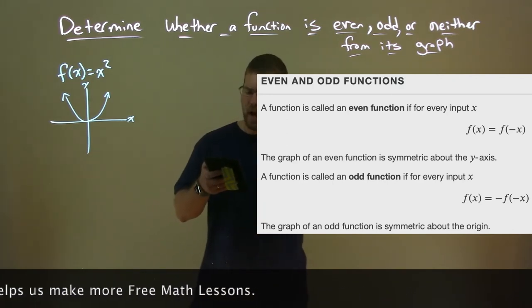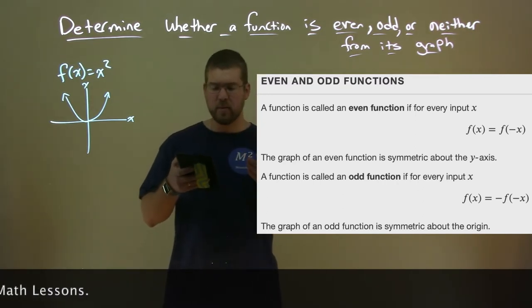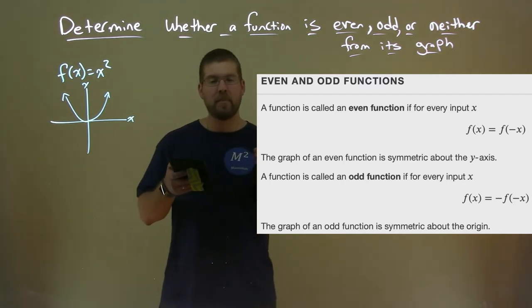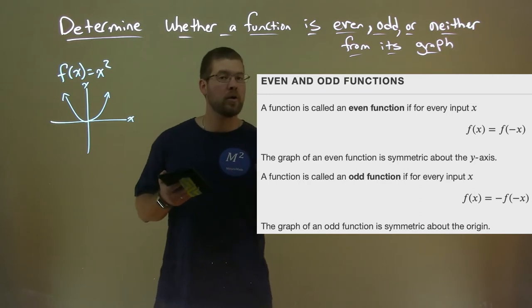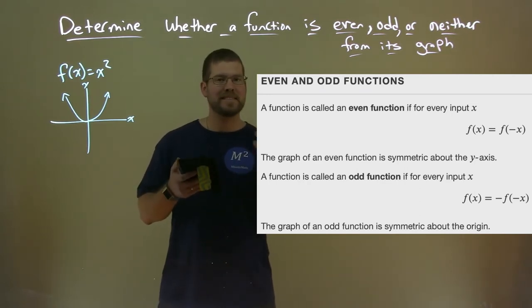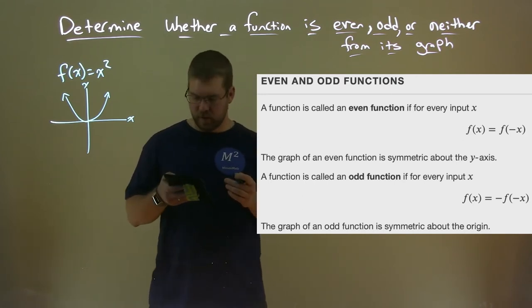A function is called an odd function if, for every input x, f(x) = -f(-x). The graph of an odd function is symmetric about the origin. As we saw earlier, reflecting over both the x and y axes is the same as reflecting about the origin.